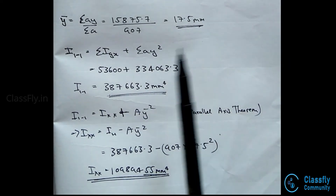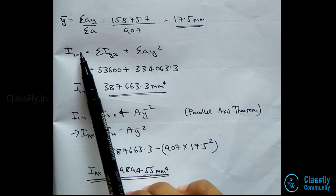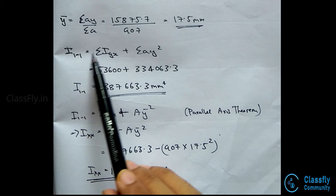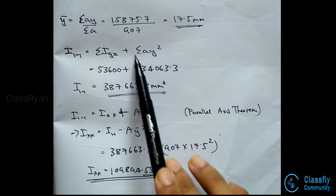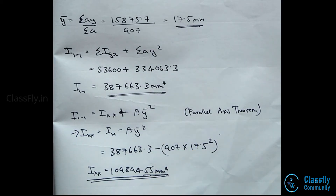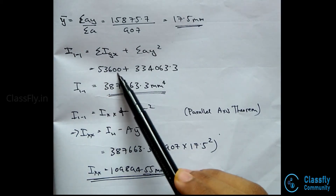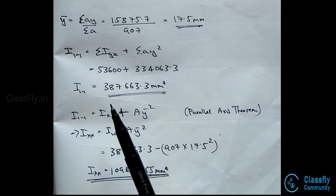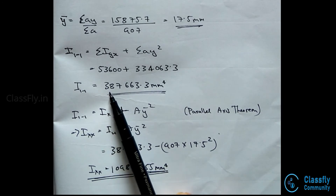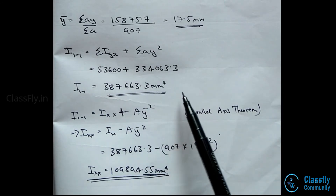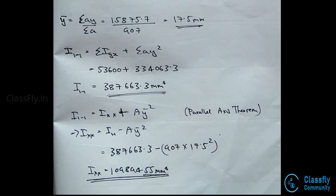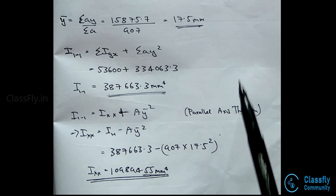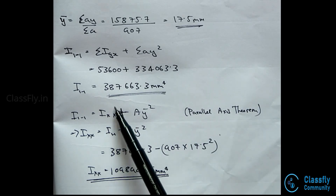The moment of inertia with respect to the 1-1 axis, I₁₁, is ΣIgx + ΣAy², so 53600 + 334063.3, which gives I₁₁ = 387663.33 mm⁴. They have asked us to find the moment of inertia with respect to the horizontal axis, Ixx.